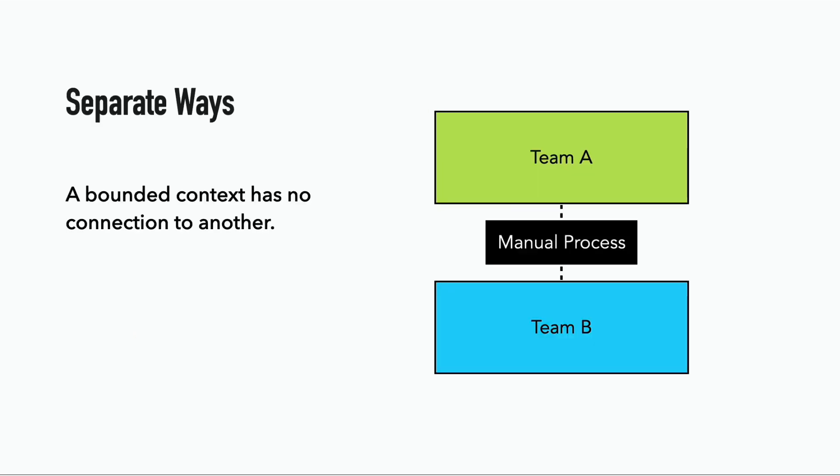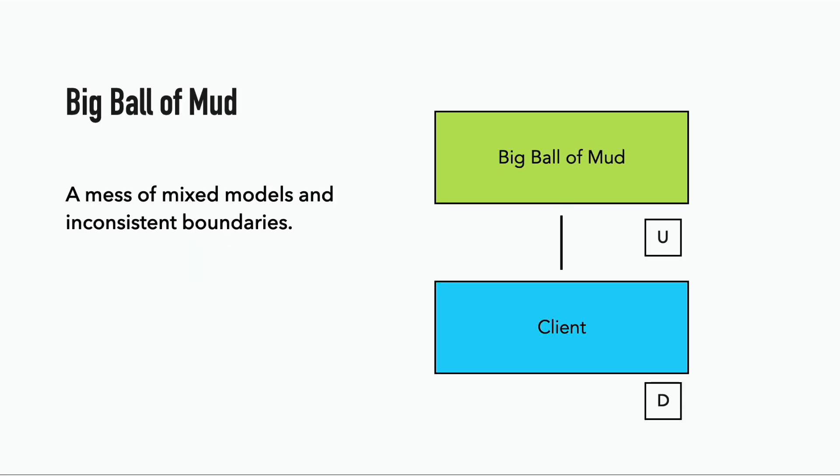For teams that have a free relationship, or when there are no technical integrations between two bounded contexts — with possibly only a manual process to integrate them — we have the separate ways pattern. It's an interesting pattern for building minimum viable products, because it avoids direct integrations, which can be expensive or time-consuming to implement.